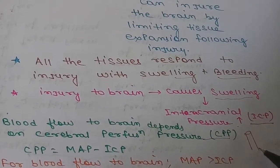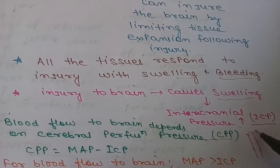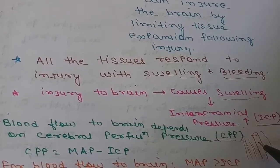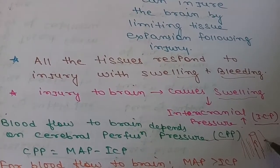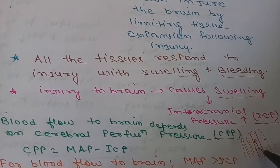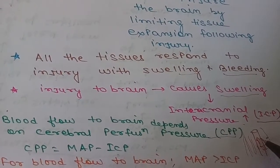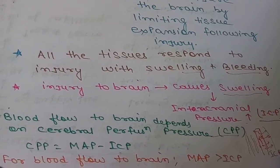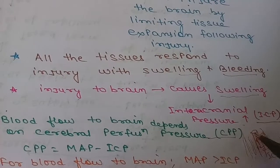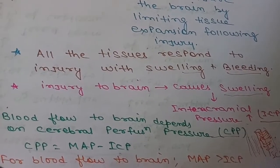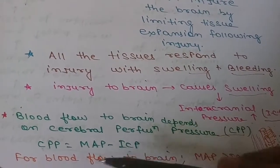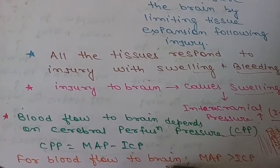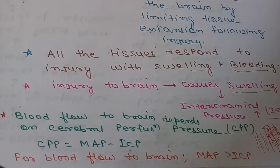Think of it this way: this is a blood vessel, and the surrounding area contains brain tissues. If the pressure inside the blood vessel is greater than the surrounding area, then nutrients can flow out to the tissues. But if intracranial pressure is greater than mean arterial pressure, the flow of nutrients to the tissues will not occur.